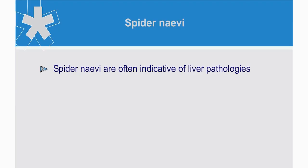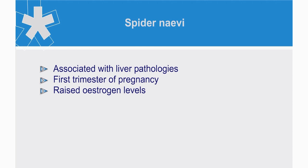Spider nevi — are they always indicative of pathologies? They're often indicative of liver pathologies. The accepted opinion is that more than five spider nevi on the upper part of the body may be of clinical significance. These might indicate liver pathologies.